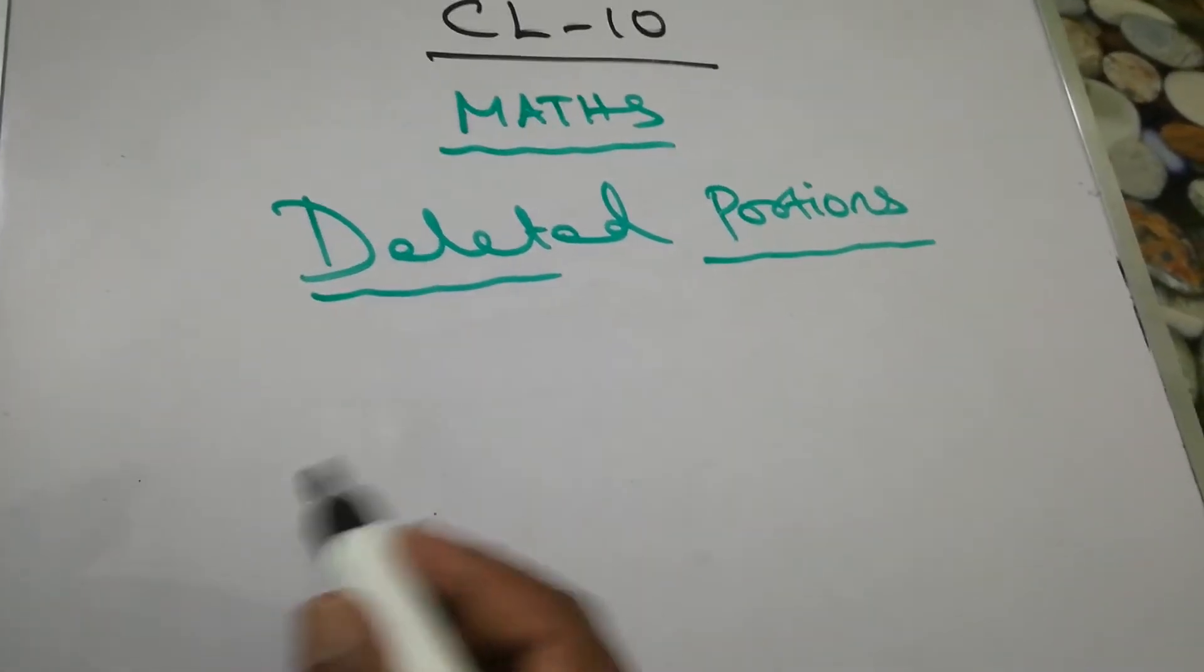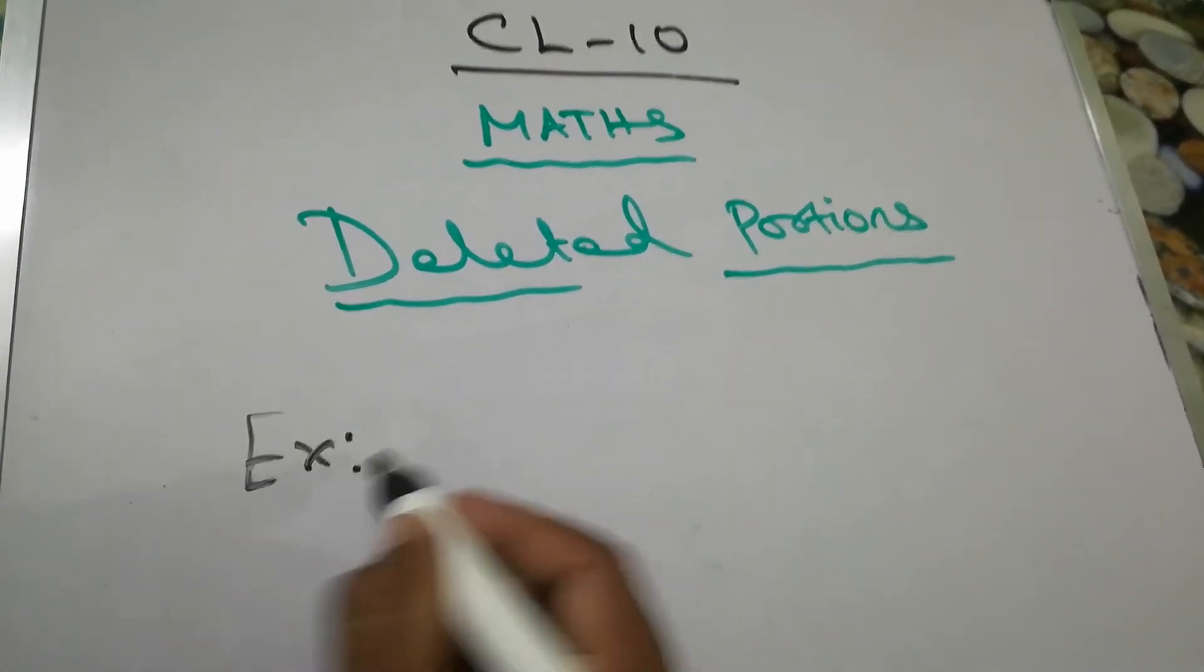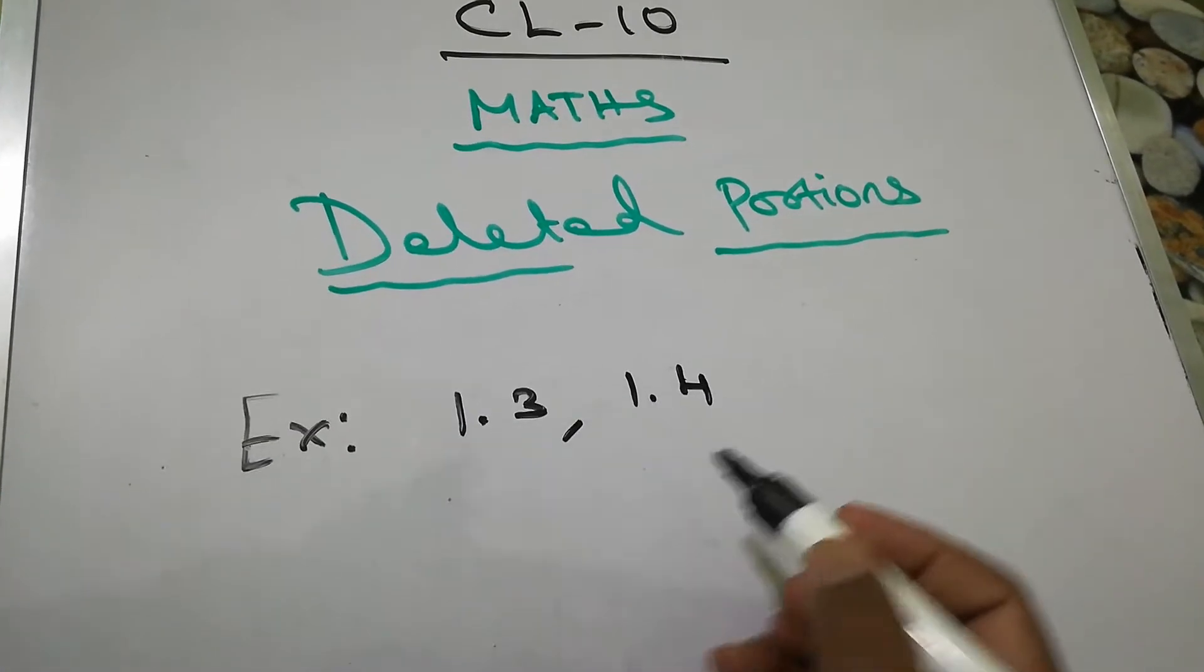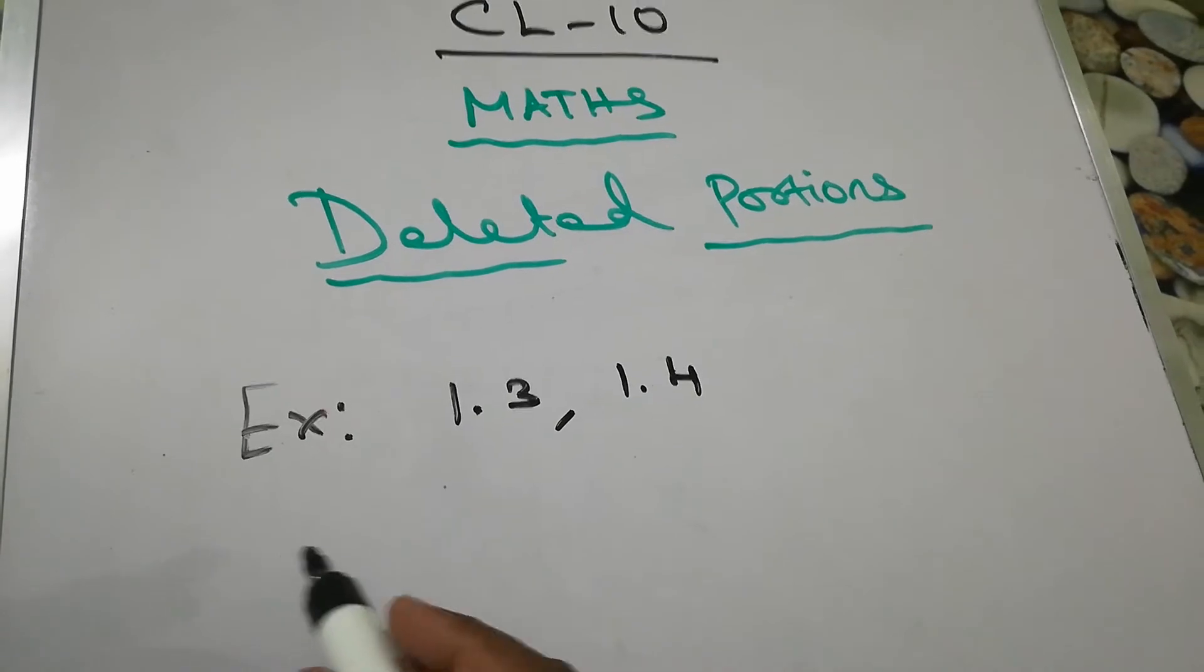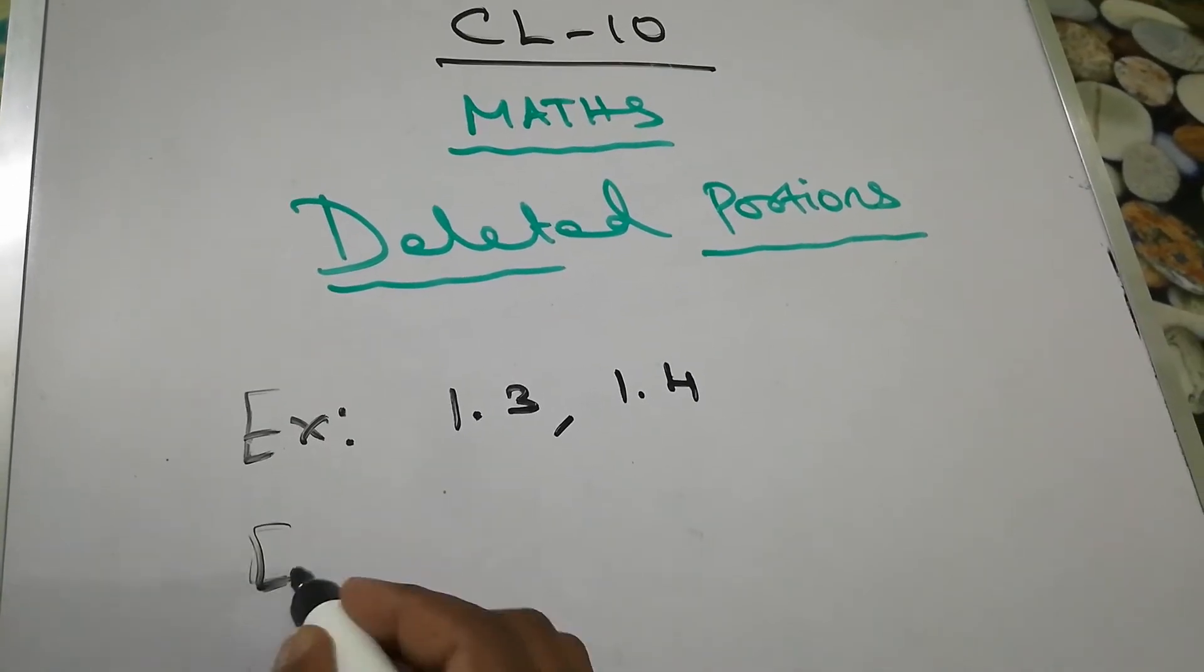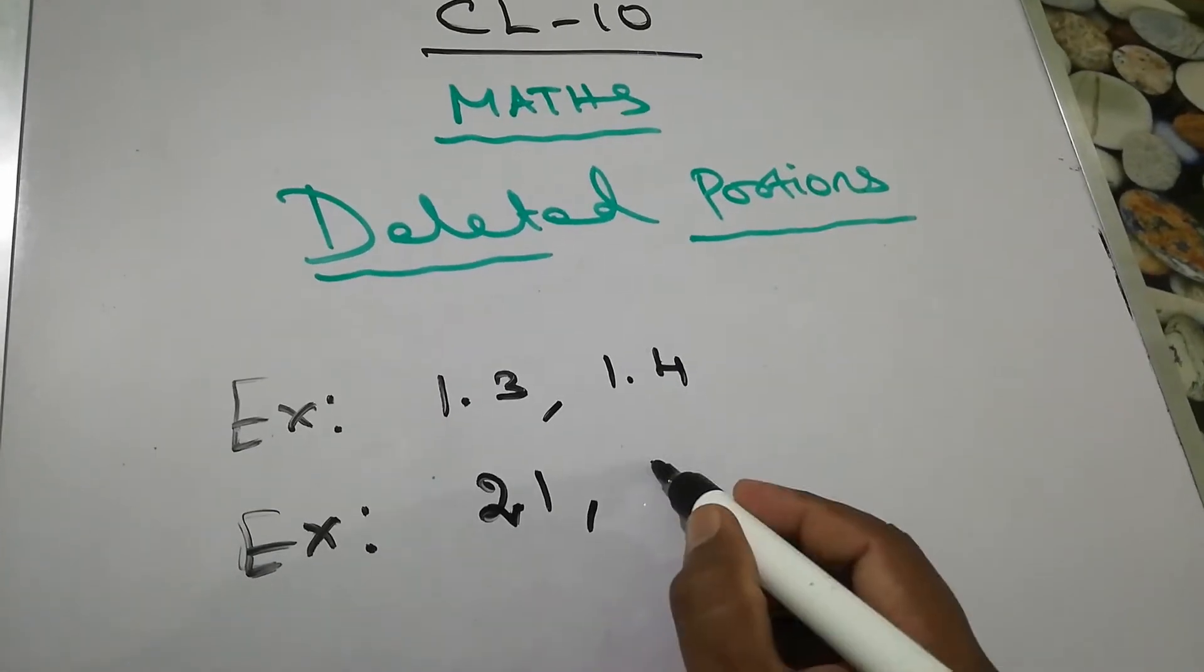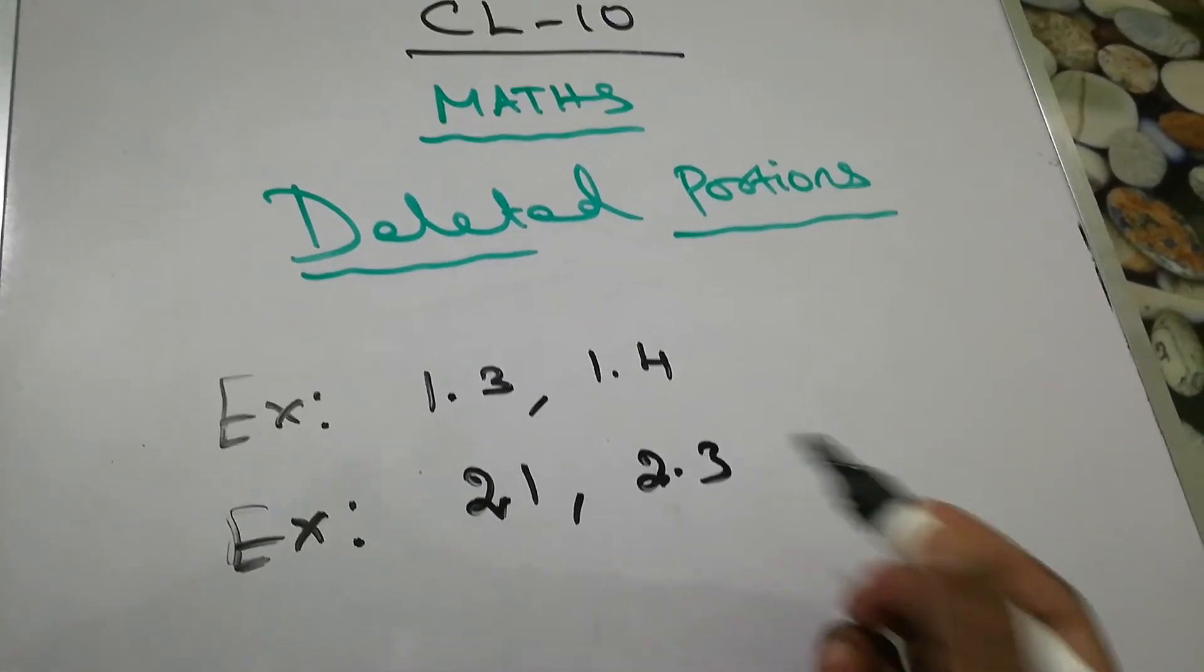You just write the deleted portions here: Exercise 1.3, 1.4, and Chapter 2, Exercise 2.1, 2.3.